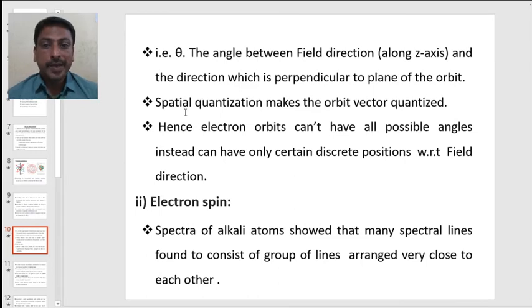It is the angle between the field direction and the direction which is perpendicular to the plane of the orbit. Spatial quantization makes the orbit vector quantized. Hence, the electron orbits cannot have all possible angles. Instead, they can have only certain discrete positions with respect to the field directions.